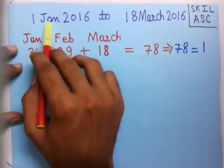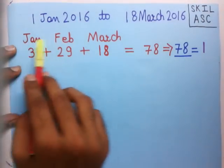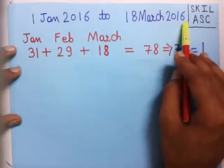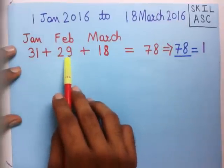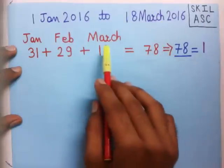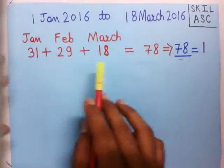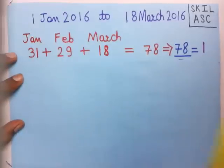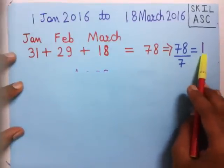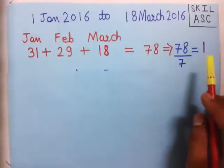To find the total days from 1st January to 18th March, we count: January has 31 days, February has 29 days (since 2016 is a leap year), and we count up to 18th March, so 18 days for March. The total number of days is 78. Dividing 78 by 7 gives a remainder of 1, so the second part has 1 odd day.